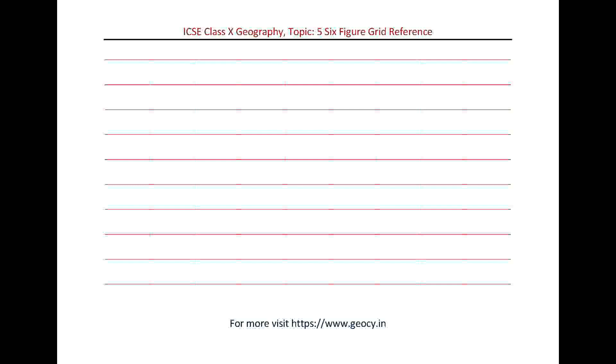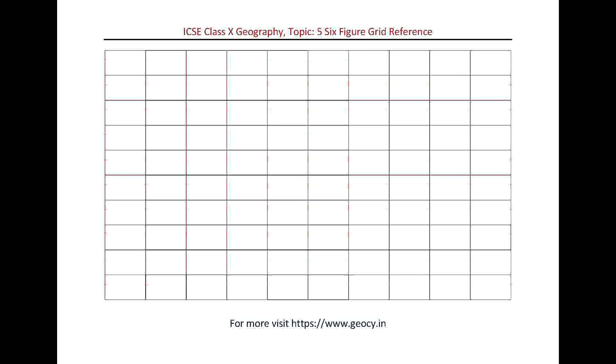So they are called Northings. These Eastings and Northings, same like longitudes and latitudes, are used to locate features and to find features on topographical maps. One grid square is equal to 1 square kilometer on the ground and 2 centimeters on the map.